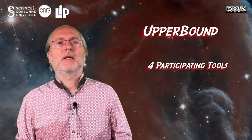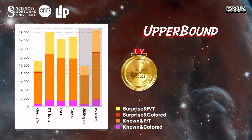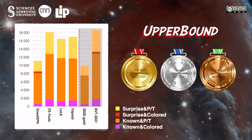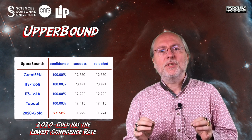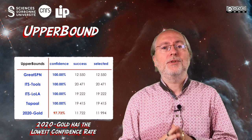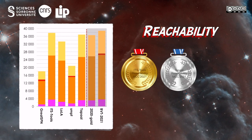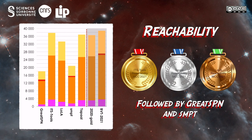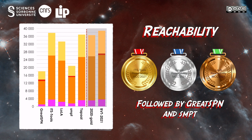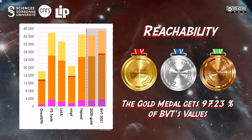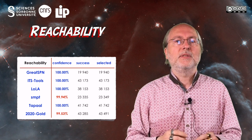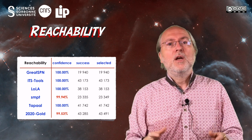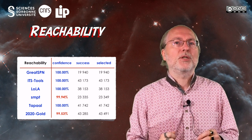For the upper bound examination, four tools did participate. The gold medal goes to ITS-Tools, then TAPAL grabs the silver one, and Lola gets the bronze medal, followed by GreatSPN. The winner is very close to BVT. The 2020 gold medal was ITS-Tools and would have been ranked third. All participating tools but SNPT reach a confidence of 100%; however, reaching more than 99% for its first participation is a good result for SNPT, which is above the 2020 gold medal.